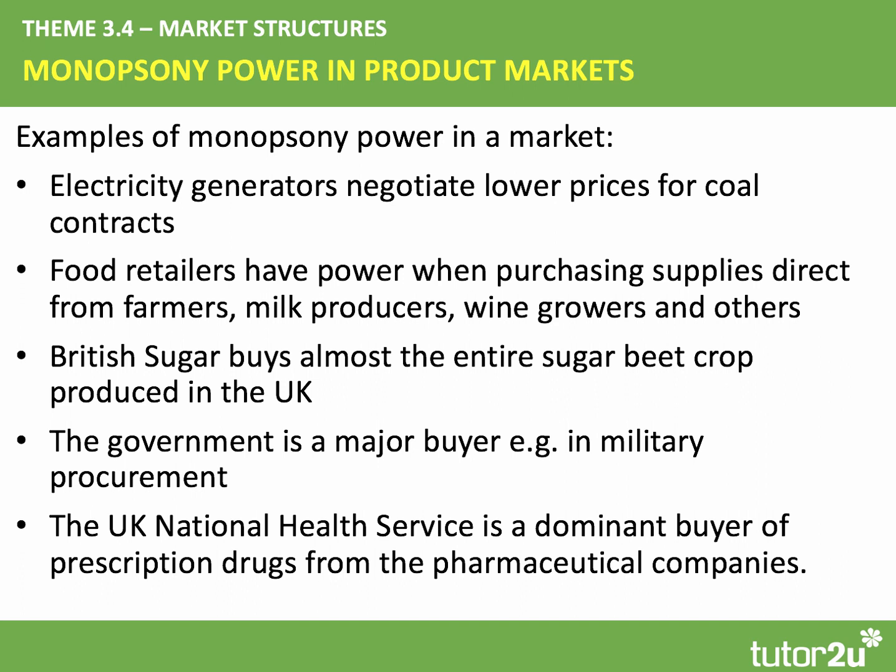There are lots of examples of monopsony power. Major electricity generators might negotiate a lower price for coal contracts or other forms of energy. Big food retailers — from Sainsbury's to Walmart to Tesco and the deep discounters — have monopsony power when buying supplies directly from milk producers, wine growers, or farmers. British Sugar, for example, buys almost 100% of the entire sugar beet crop produced in the UK. The government is a major buyer when spending on defence projects, and the NHS is a dominant buyer of prescription drugs from pharmaceutical companies, though there have been cases of the NHS being overcharged for certain drugs by big pharma companies.